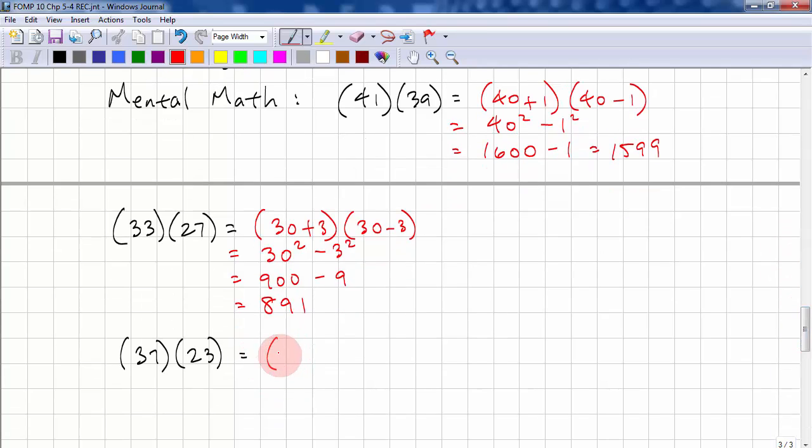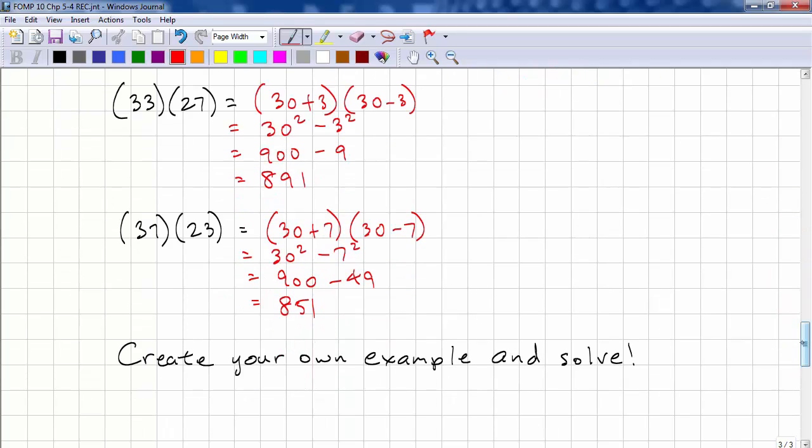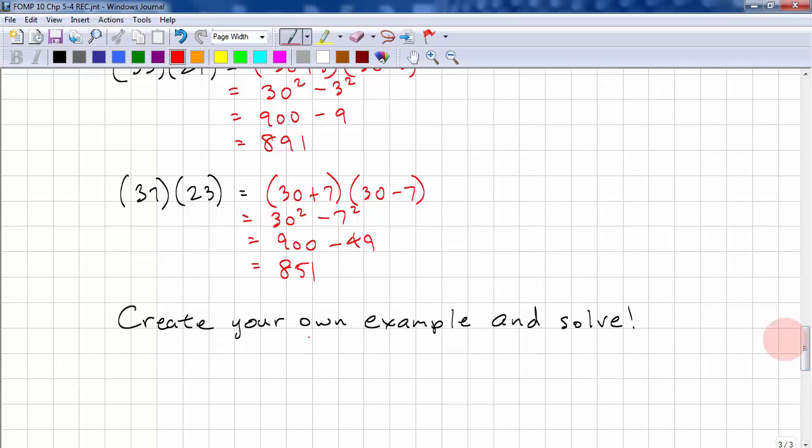Here we have (30 + 7). (30 - 7). So this is 30² minus 7². This is 900 minus 49. And that's an easy subtraction. That's 851. So if you have some free time, create some of your own examples and solve. And you will be a mathemagician. And that completes this lesson.